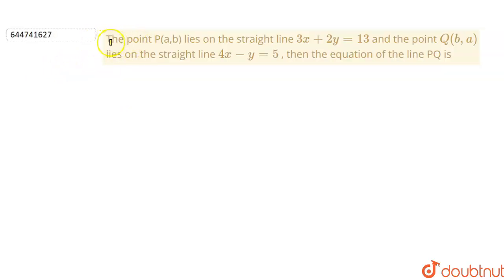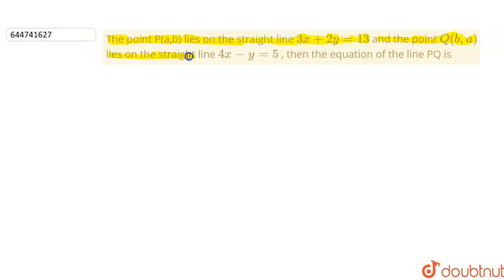Hello students. In this question we are given the point P(a,b) which lies on a straight line 3x + 2y = 13, and the point Q(b,a) lies on another straight line 4x - y = 5. We have to find the equation of the line PQ.